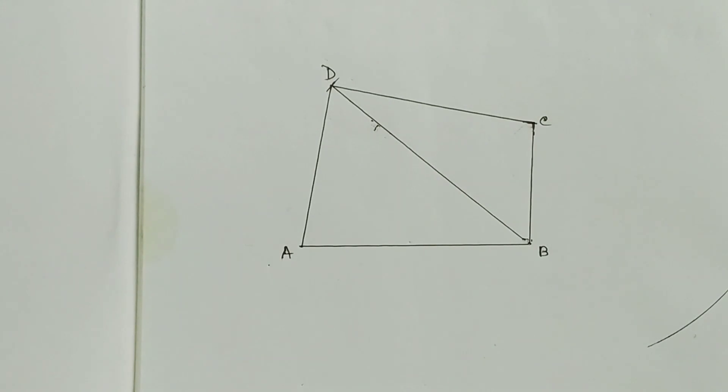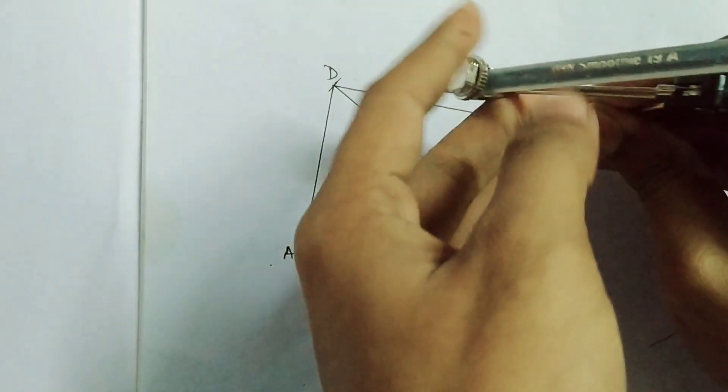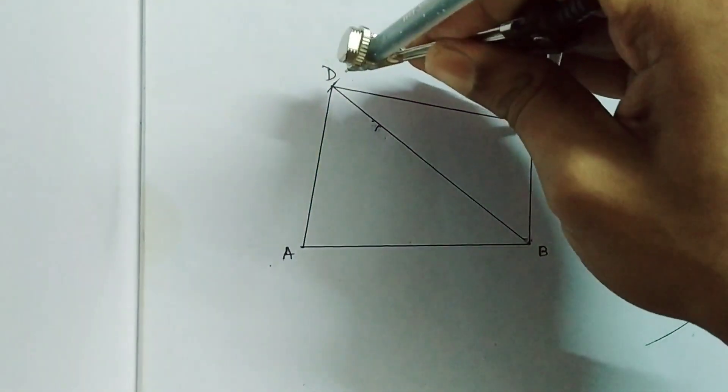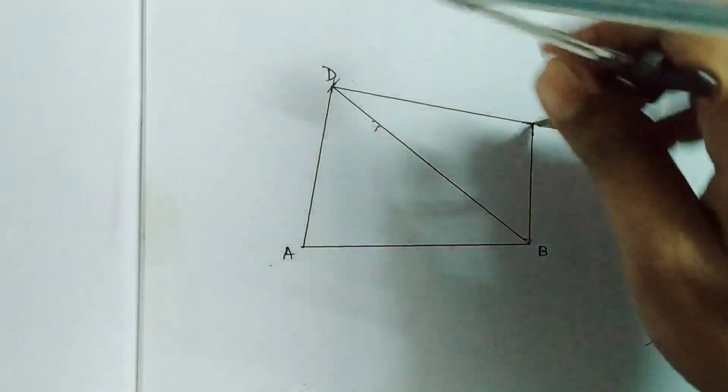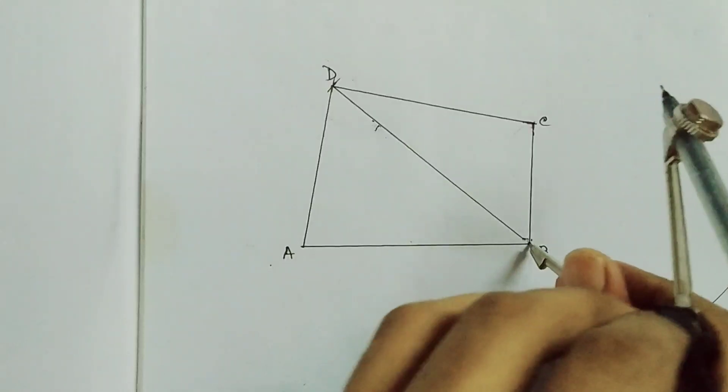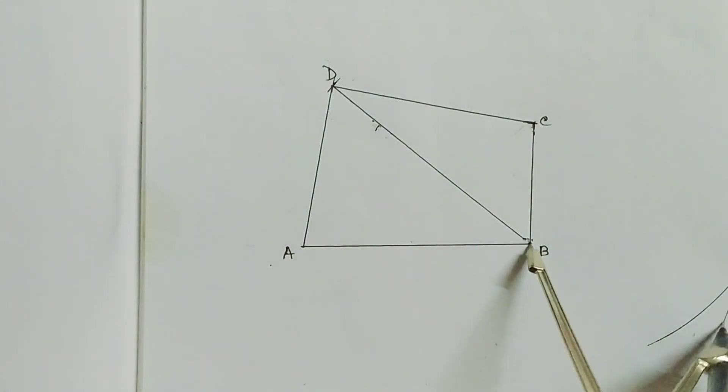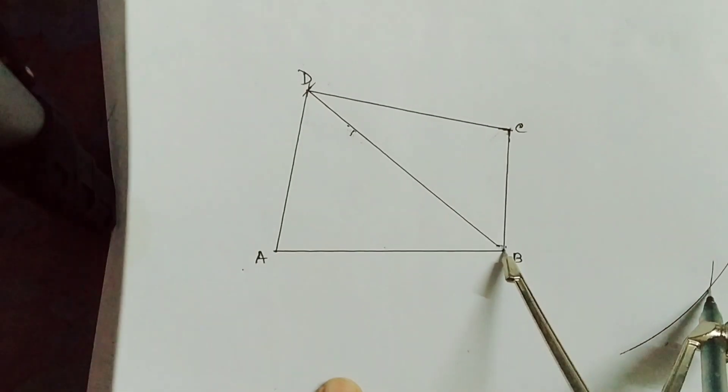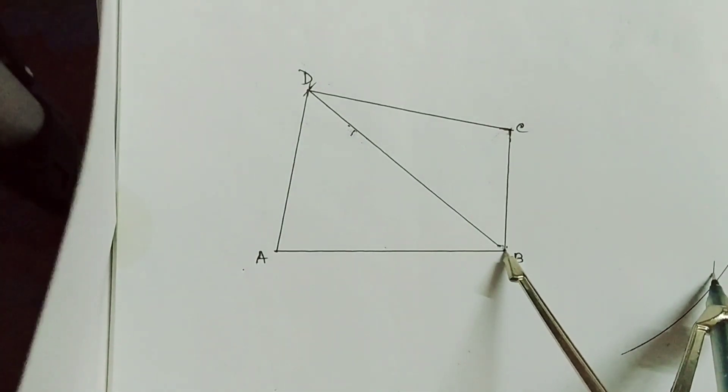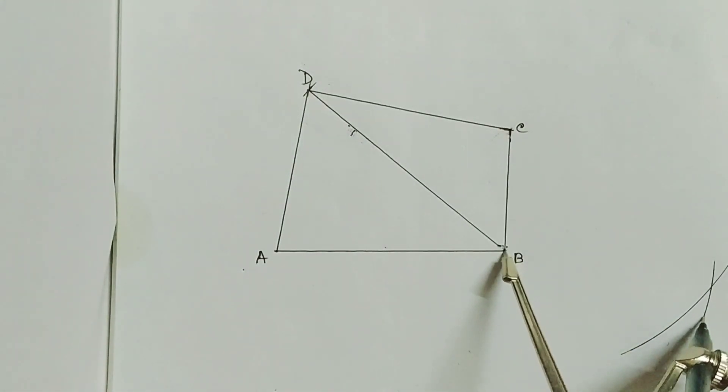Then what we have to do is just take the measurement of DC, then putting the compass at B we have to draw another arc here like this one.